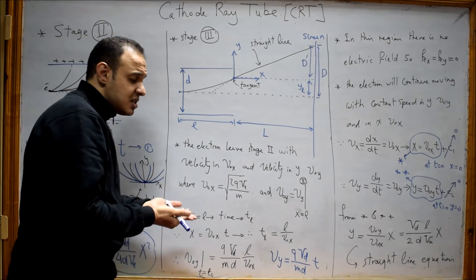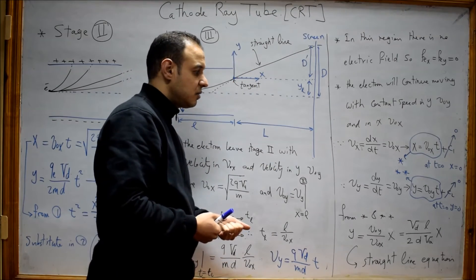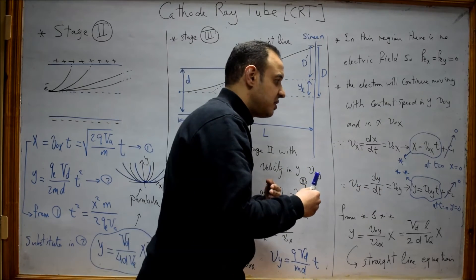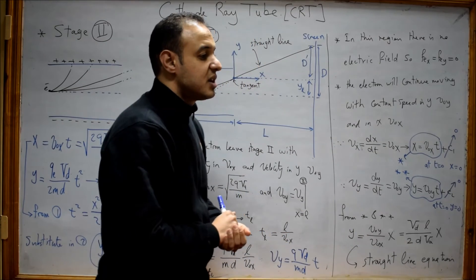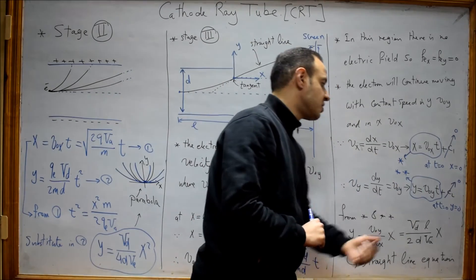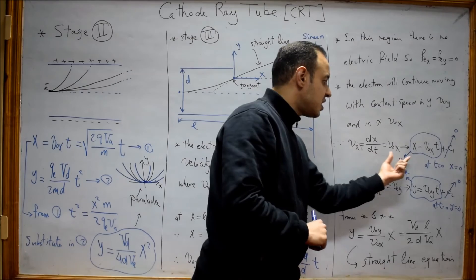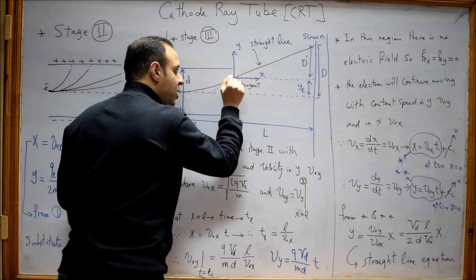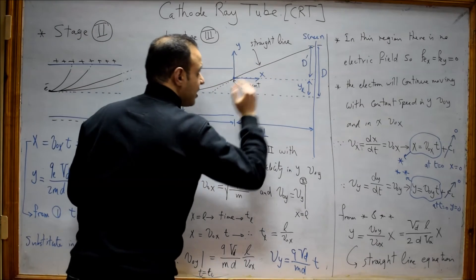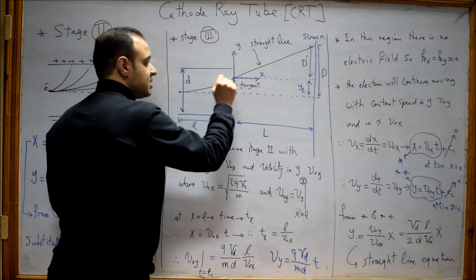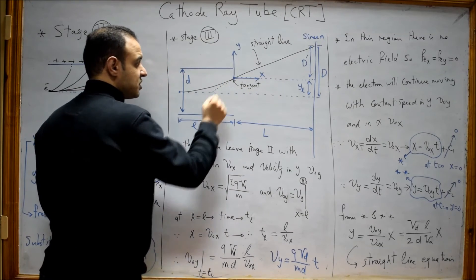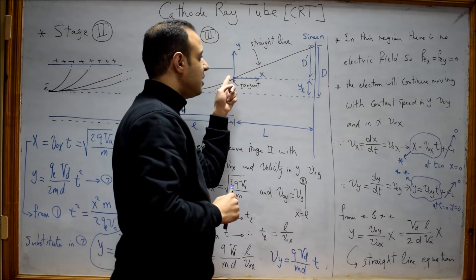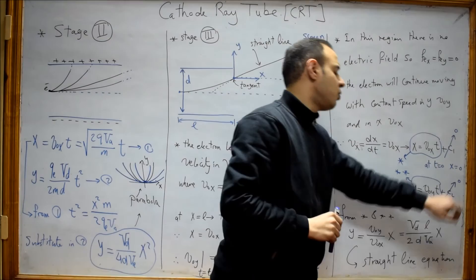To find the displacement done by the electron in x and y directions, we use the fact that velocity is the derivative of displacement. For the x direction, vx = dx/dt = constant v₀x. Taking the integration of both sides gives x = v₀x · t + C₁. By taking the exit point of the deflection plates as the origin, at t = 0 we have x = 0 and y = 0, so C₁ equals zero.